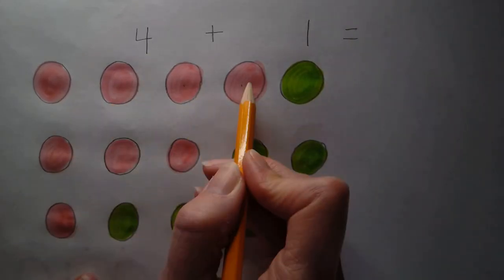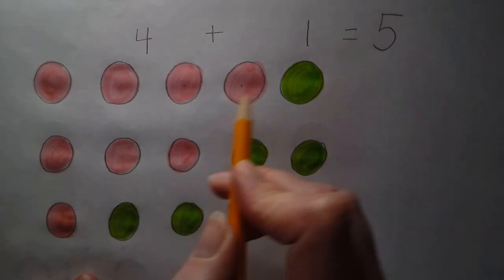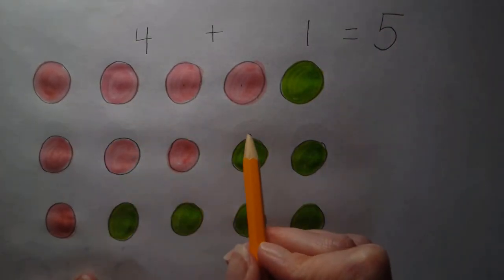So if I add those together, what will it equal? One, two, three, four, five. That's right. Every time it's going to equal five. Because if you remember, I drew five circles.